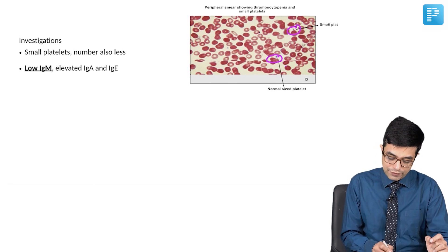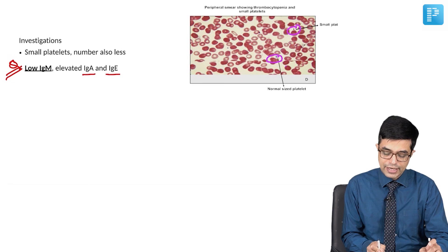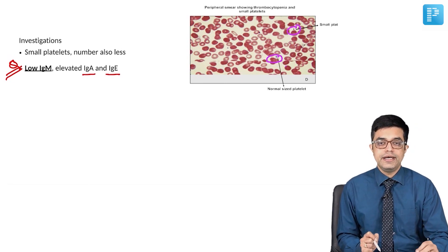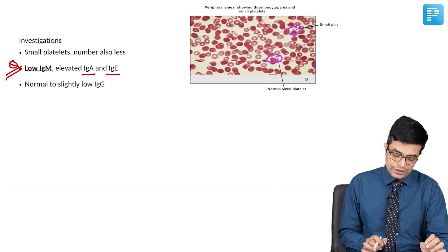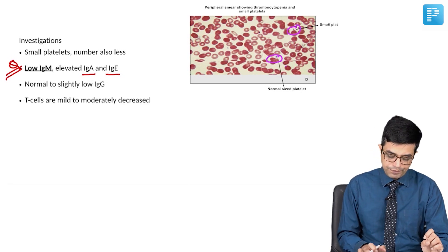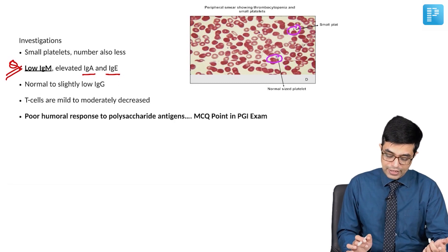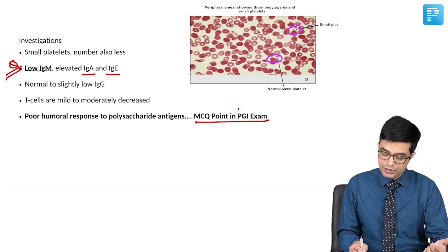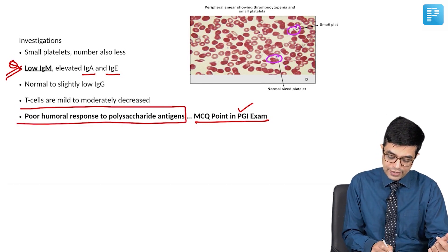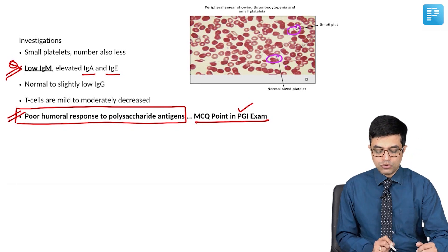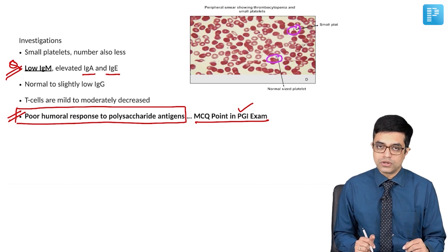Key MCQ points on immunoglobulin levels: IgM levels are low, while IgA and IgE are elevated — raised IgE partly explains the occurrence of rash in these children. IgG levels are normal to slightly low. T cells are mildly to moderately decreased — it is not a very severe form. A PGI super speciality MCQ point: there is poor humoral response to polysaccharide antigens, meaning antibody production against polysaccharide antigens is poor.